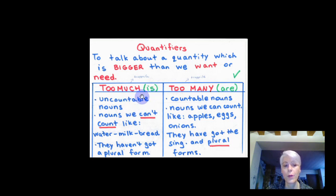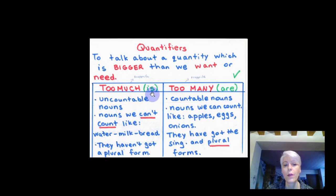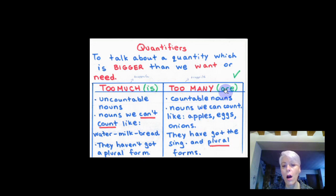Let me repeat. There is too much water. There is too much milk. There is too much bread. There are too many apples. There are too many eggs. There are too many onions.